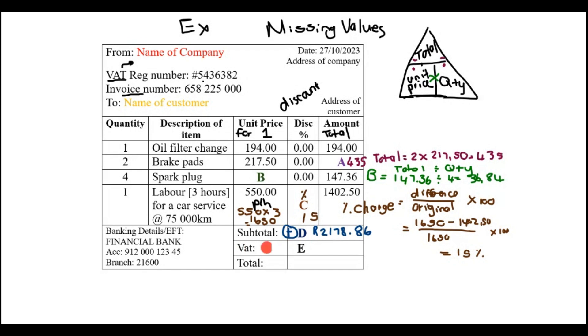In the case of VAT, we remember that VAT is actually also fifteen percent. So if I want to find E, I need to find fifteen percent of that subtotal amount two one seven eight point eight six. Fifteen percent of this amount gives you the answer of three hundred twenty six point eight three.